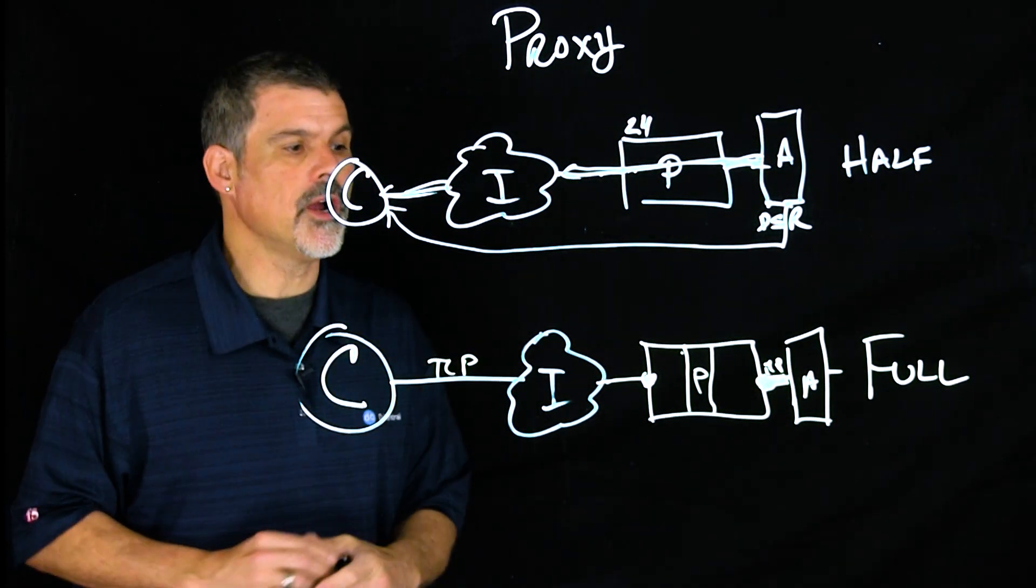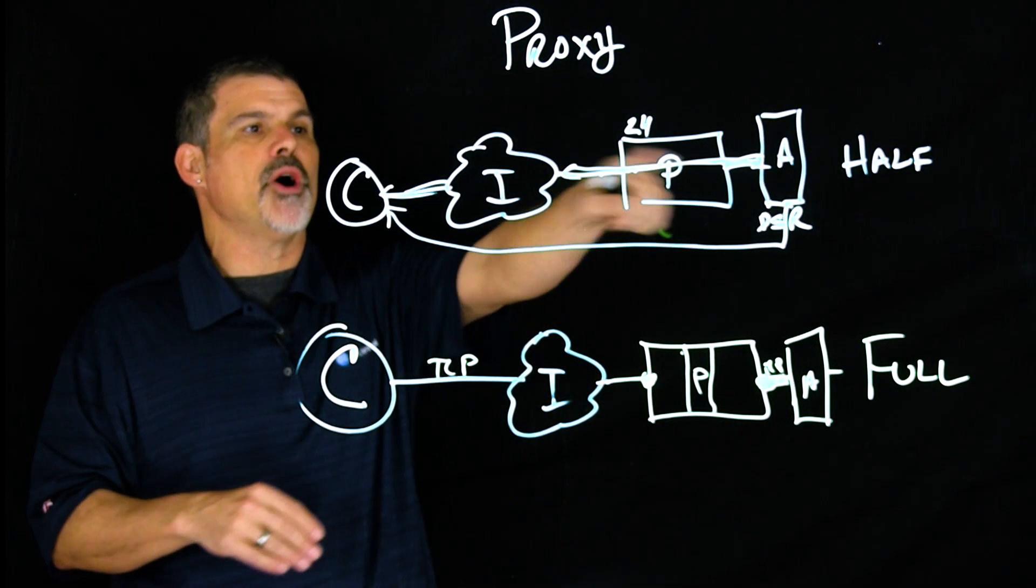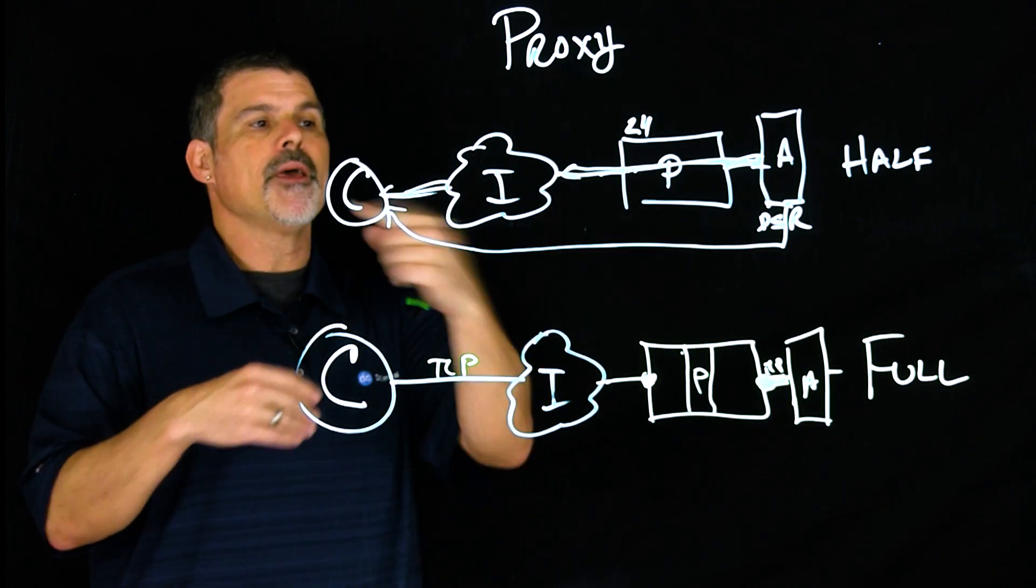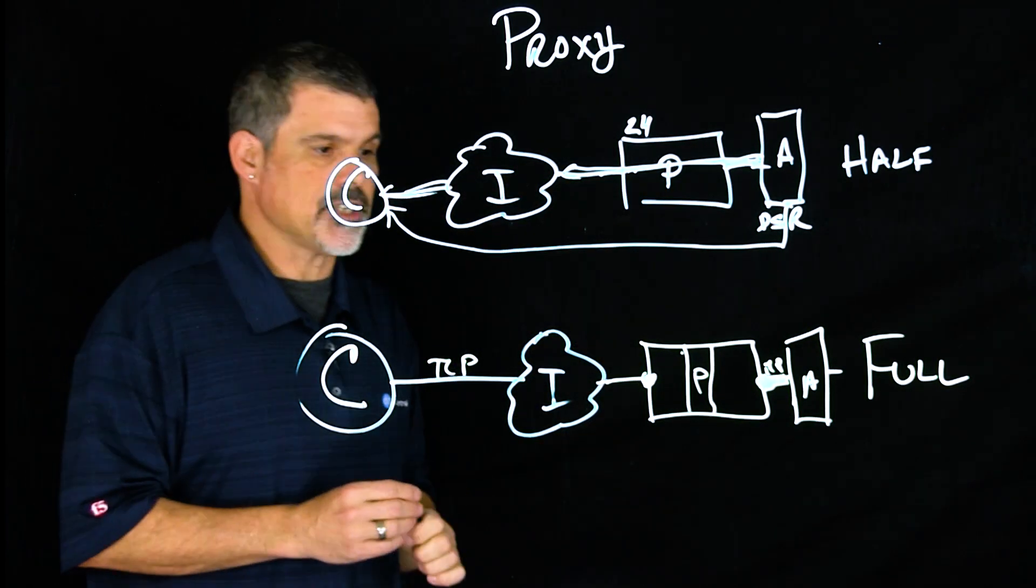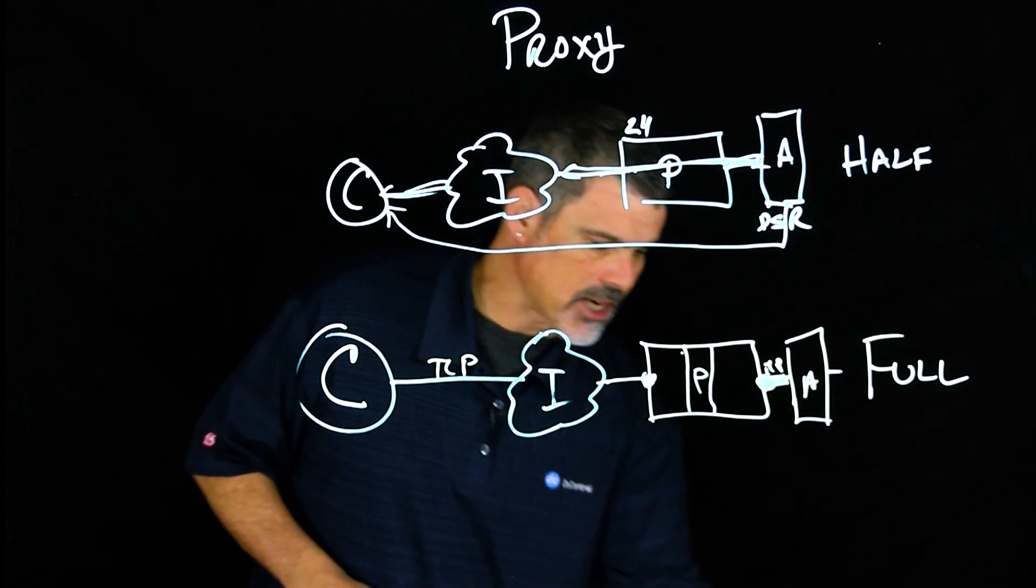So that would be your full proxy, two separate connections on either end, as opposed to the half proxy where after the first call setup, traffic just passes through.